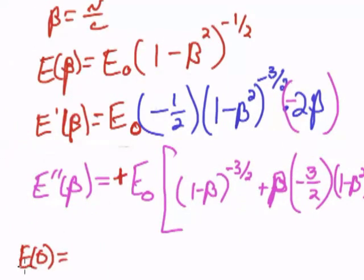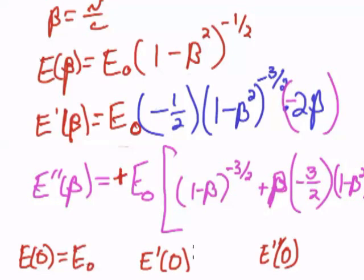So let's find out what these terms are, E of 0, E prime of 0, and E double prime of 0. So, E of 0 is just going to be E sub 0, and this is 1 minus 0, so it will be 1, so E of 0 is E sub 0.